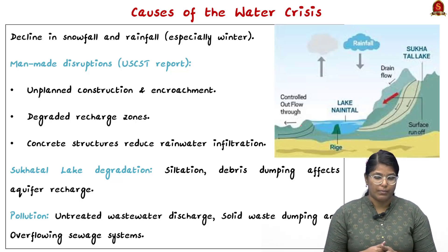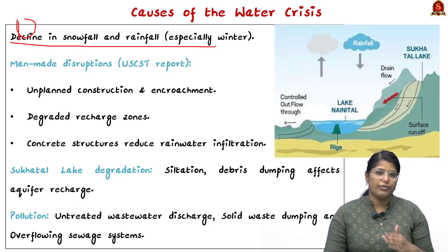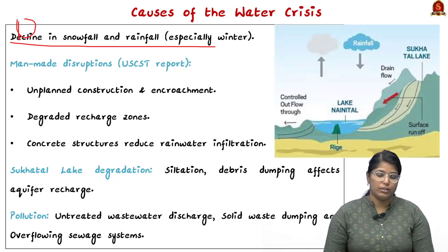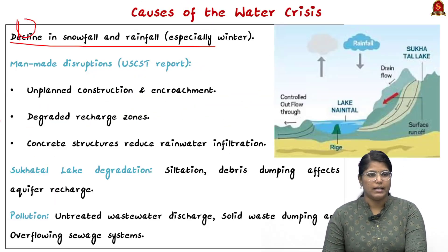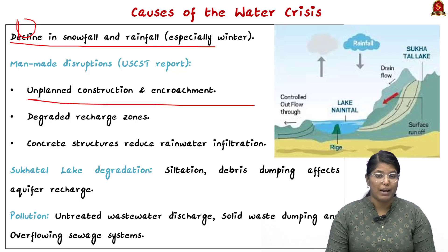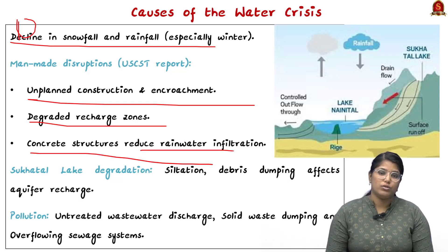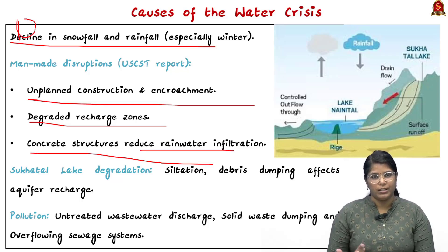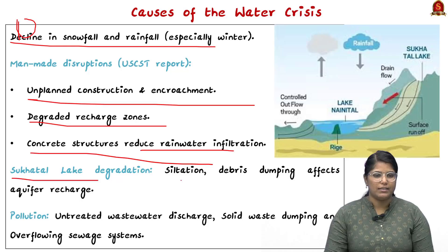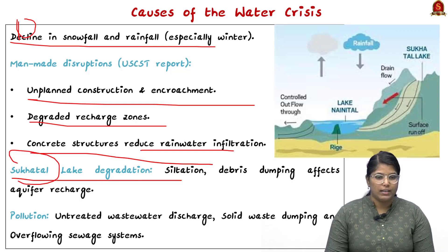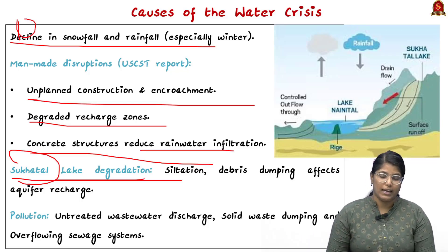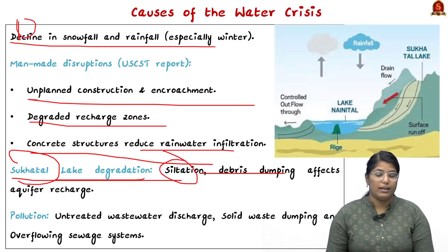The lake has dried up due to multiple reasons. First, climate change — there has been a significant decline in snowfall and rainfall especially during winter, leading to reduced water storage that normally replenishes the lake for summer. Second, manmade disruptions — unplanned construction and encroachment, degradation of recharge zones, and construction of concrete structures have reduced rainwater infiltration into the lake. Additionally, the Sukhatal Lake restoration project has heavily altered that lake, using concrete and causing siltation, affecting the aquifer recharge ability.